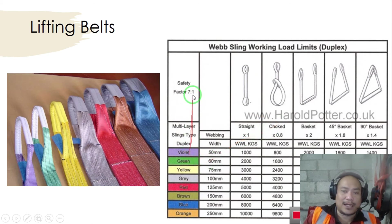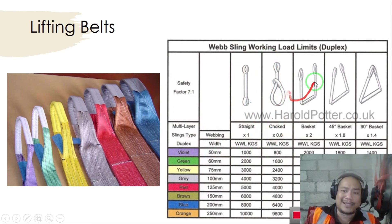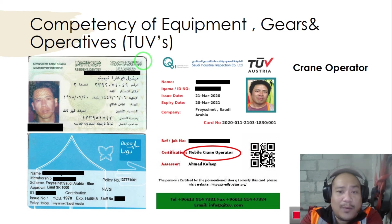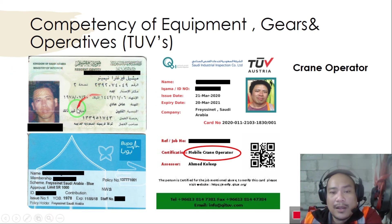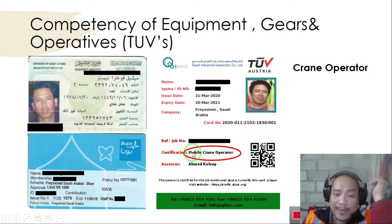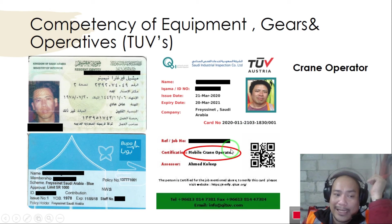This is a sample of the web sling load limits. Violet and other colors have corresponding weight capacities depending on the configuration — straight, choke, basket type at 45 degrees, and full basket. For competency of operatives on our site, we require the national ID, insurance of the operative, and the TÜV card stating 'mobile crane operator' including the tonnage that the operator is certified to handle — for example, up to 100 tons.